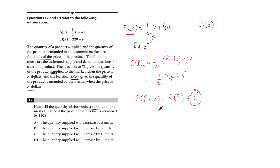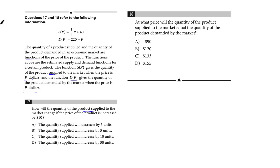Alternatively, look at the coefficient of p, which is the slope (½). For every increase of 1 in p, s(p) increases by ½. So if p increases by 10, the output increases by 5. The answer to Question 17 is option choice B: the quantity supplied increases by 5 units.